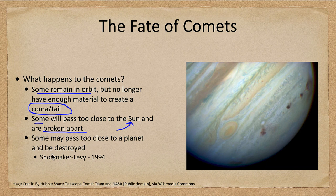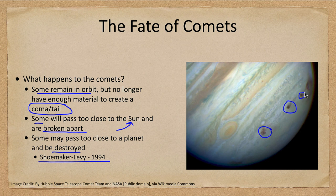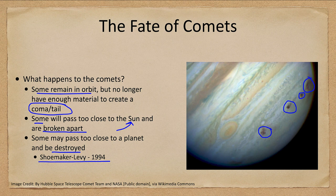Some comets may pass too close to a planet and be destroyed. Comet Shoemaker-Levy broke apart and collided into Jupiter, and we can see the scars of those impacts which lasted for several weeks when the collision occurred back in 1994. Jupiter rotates very fast so we quickly saw the scars left behind as those pieces of comet impacted with very intense energies. And just like asteroids, comets could strike Earth and cause damage as well.